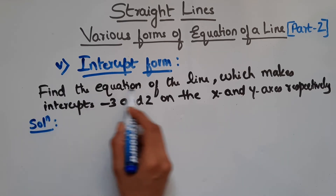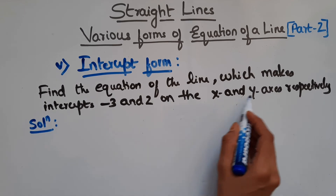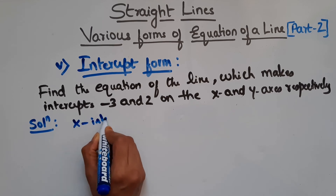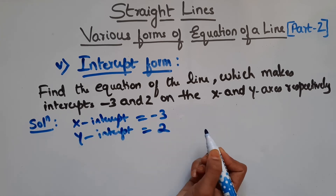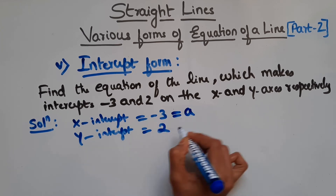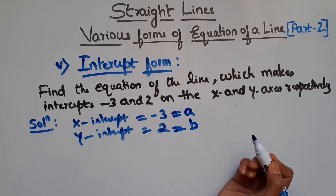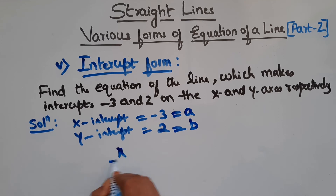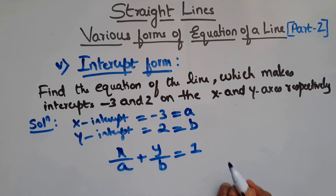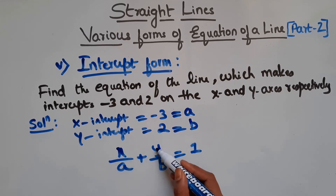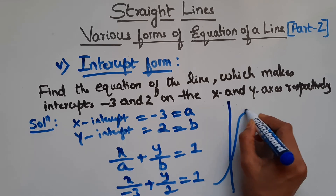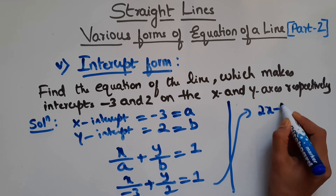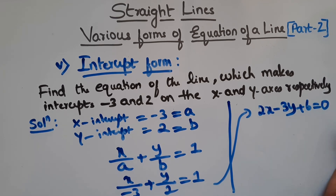So now let us see this problem: find the equation of the line which makes intercepts minus 3 and 2 on the x and y-axis respectively. So x-intercept is minus 3, which means a equals minus 3, and y-intercept is 2, which means b equals 2. Using the formula x/a plus y/b equals 1: x/(minus 3) plus y/2 equals 1. Simplifying with LCM, we get 2x minus 3y plus 6 equals 0. This is your equation of the line.